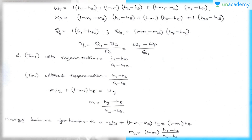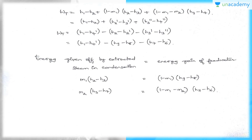You can see the equations used here — with regeneration, what mean temperature we get, without regeneration, and the energy balance equation for heater 2. In the regenerative feed water heating, the energy given off by extracted steam in condensation is equal to the energy gained by the feed water. This is the turbine work. You can see H1 minus H2 and H2-dash minus H3, compared to H1 minus H4-dash. By the usage of two feed water heaters, you can obtain the turbine work.